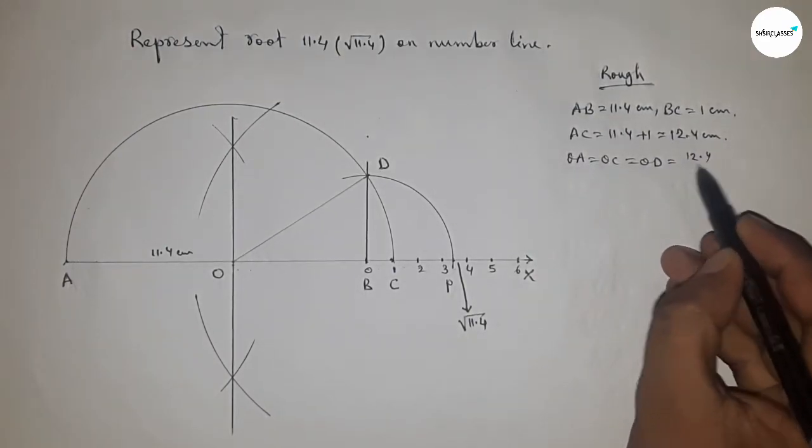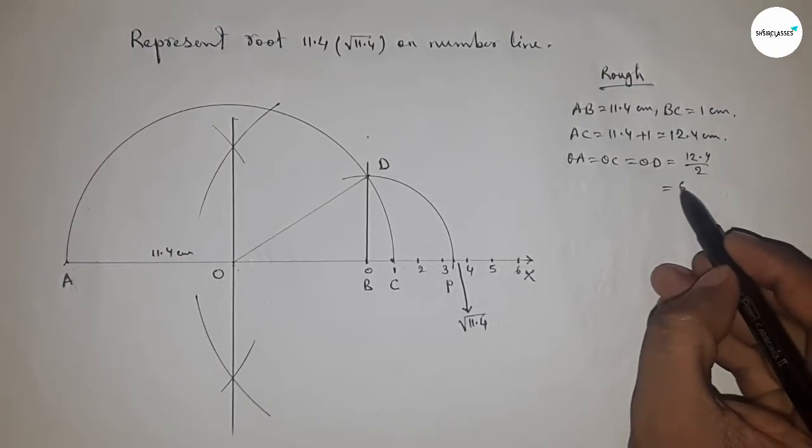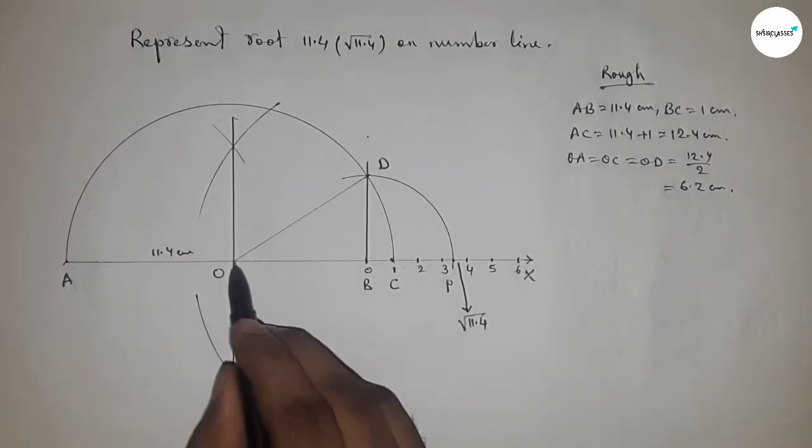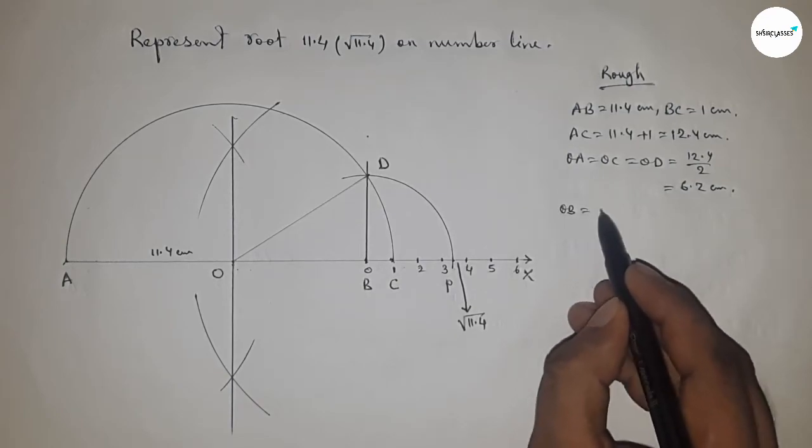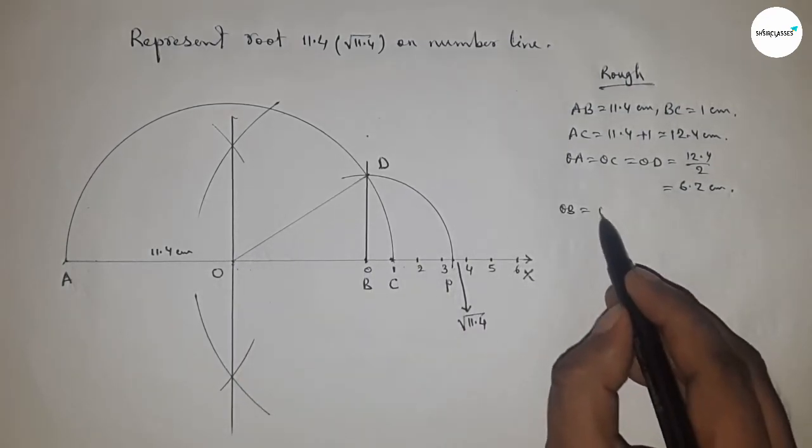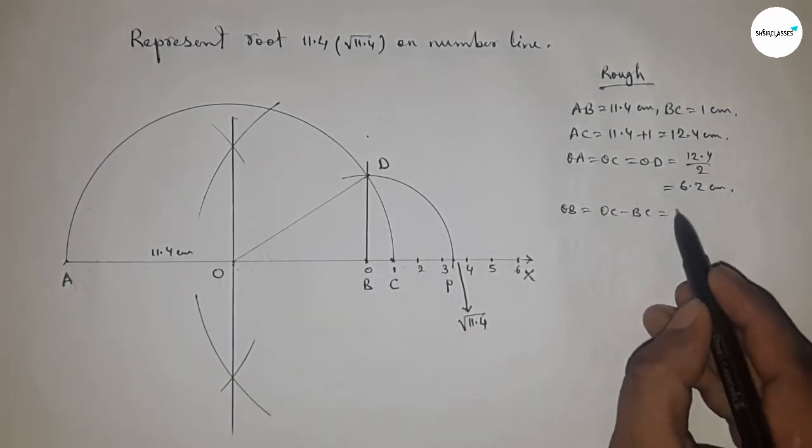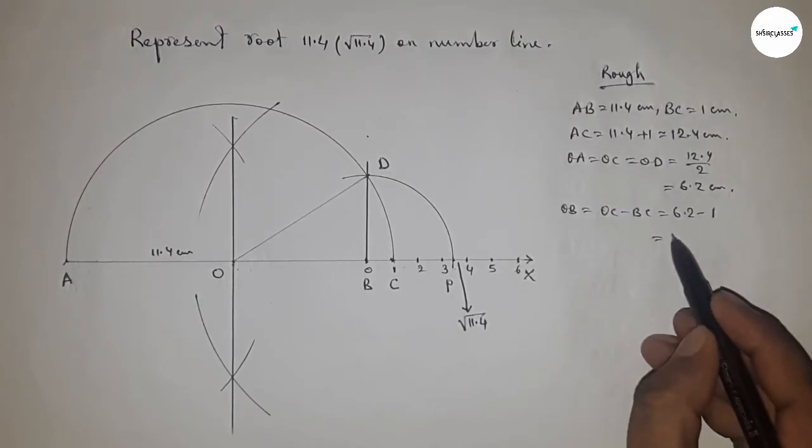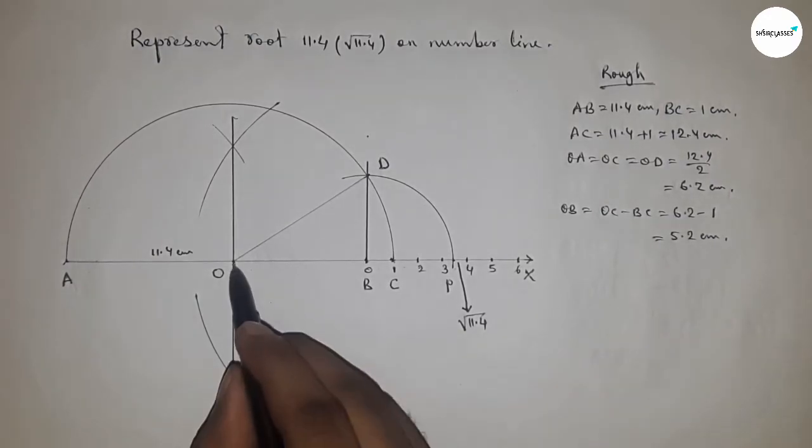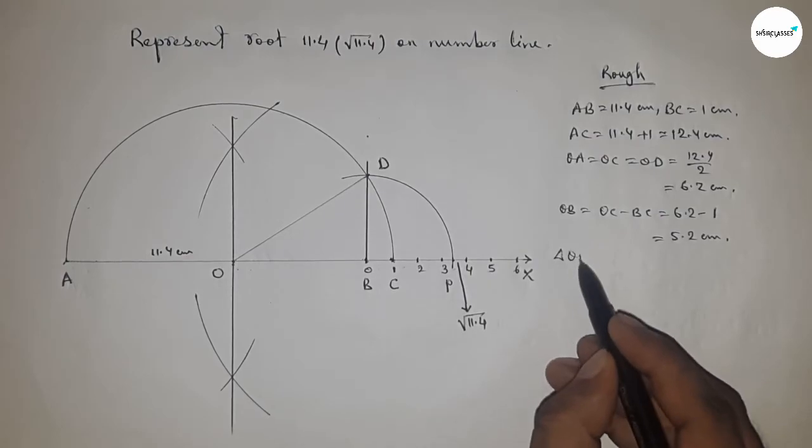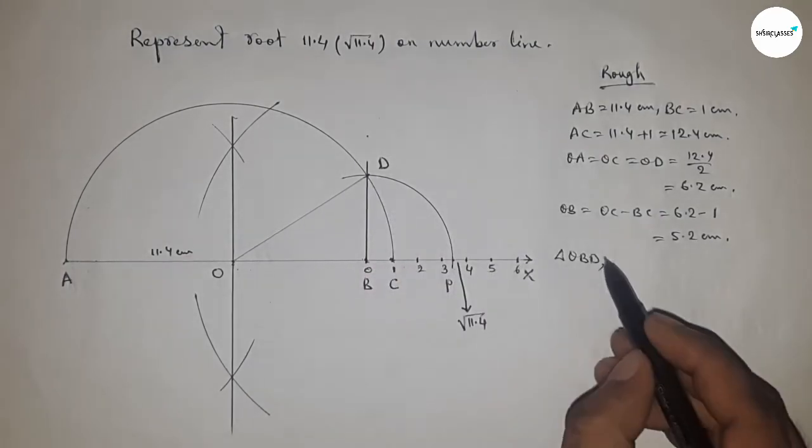Radius OA = OC = OD = 12.4/2 = 6.2 centimeter. Distance OB = OC - BC. Putting the values of OC and BC, this equals 5.2 centimeter.